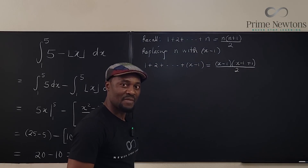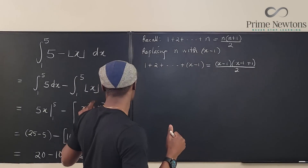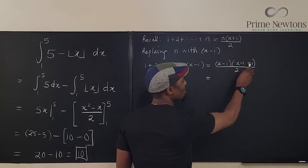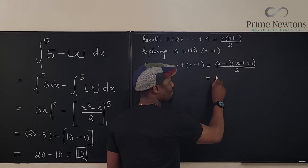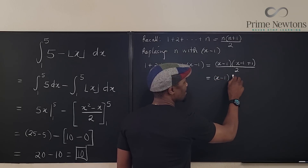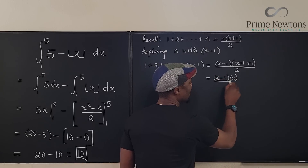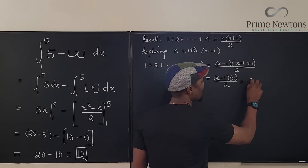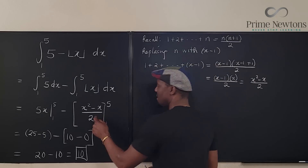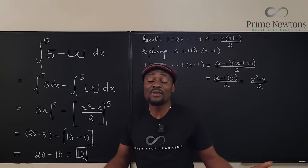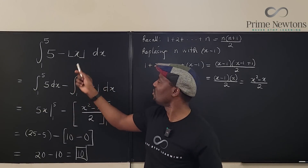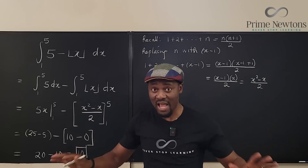Applying the formula: (x minus 1) times (x minus 1 plus 1) divided by 2. That simplifies to (x minus 1) times x divided by 2, which equals x squared minus x over 2. That's exactly the antiderivative you use for the integral of the floor function of x.